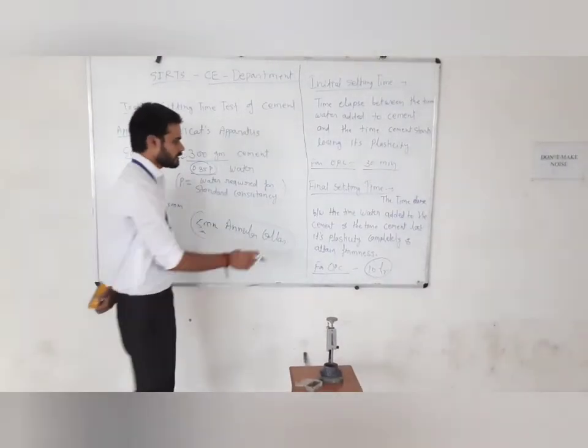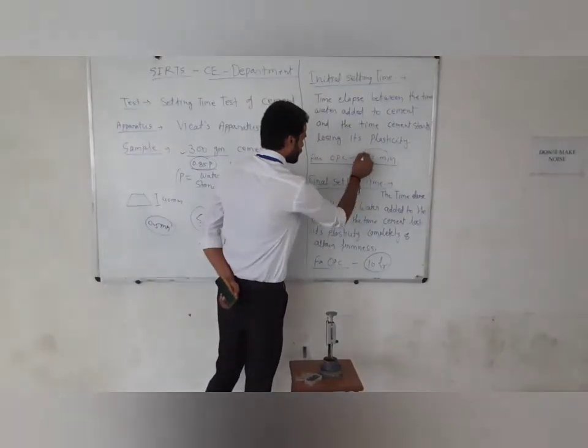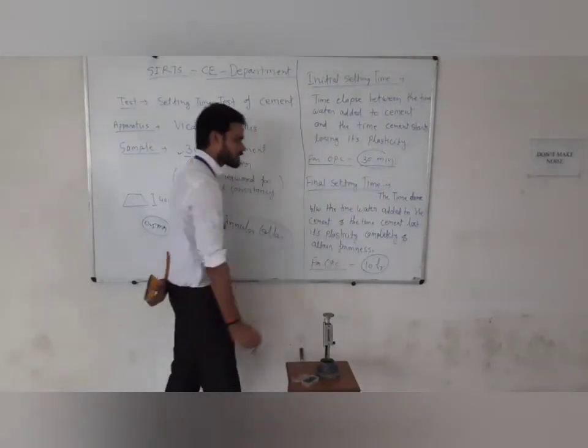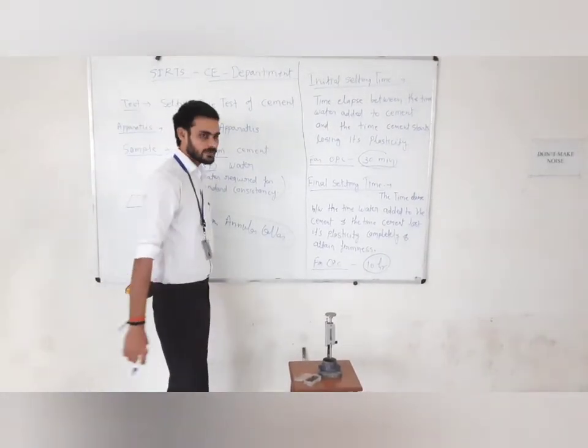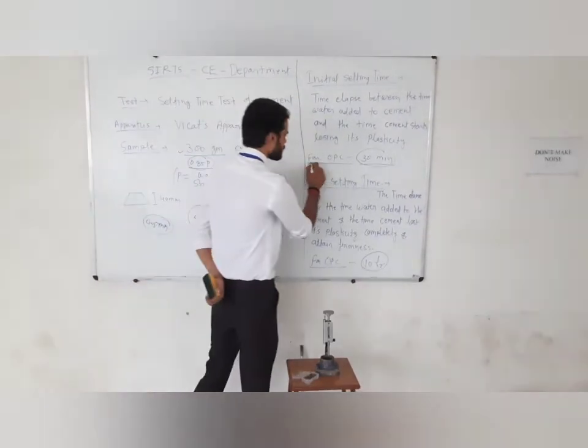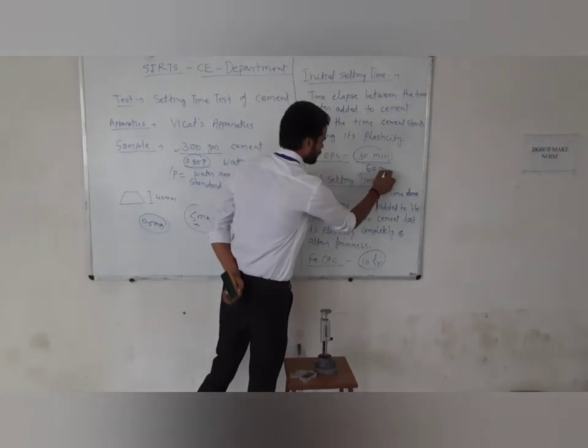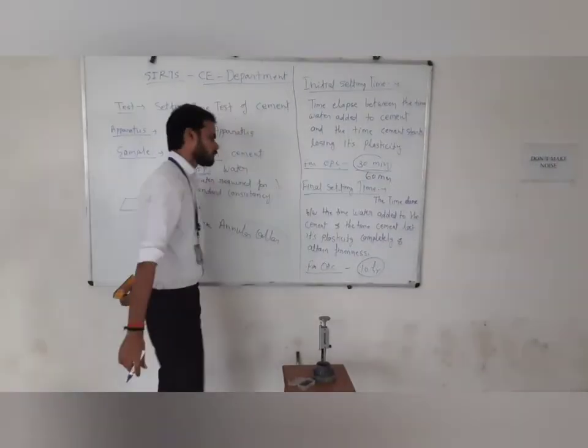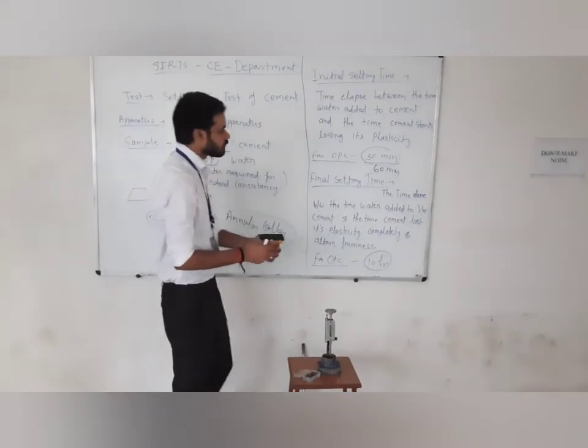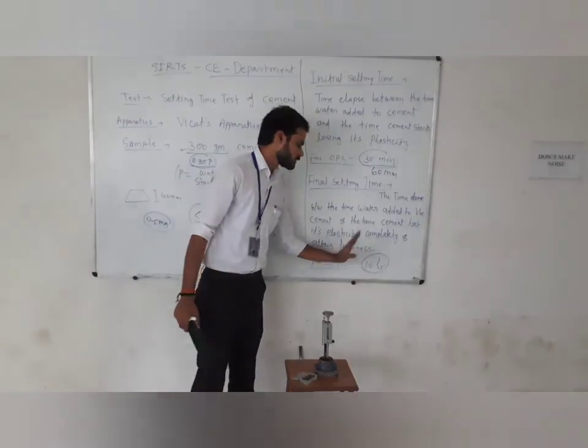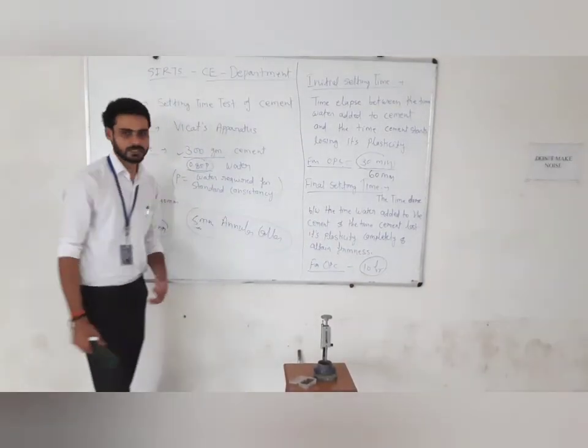For cement, the initial and final setting time will vary for special types. Like, if we look at low heat cement, low heat cement initial setting time will be 60 minutes. This varies for different cement types. Thank you.